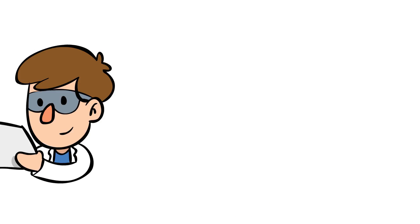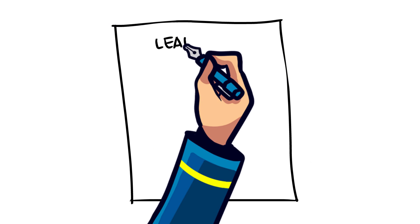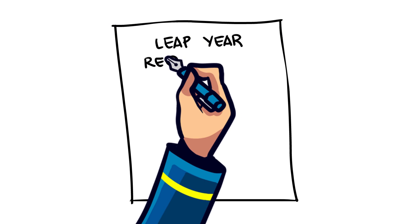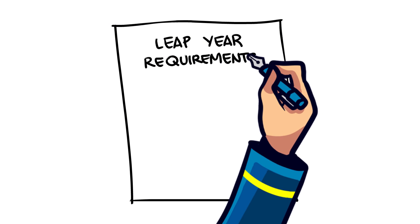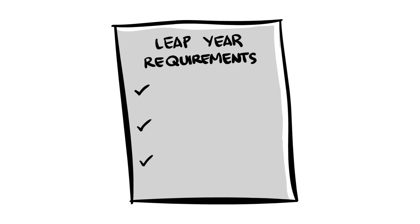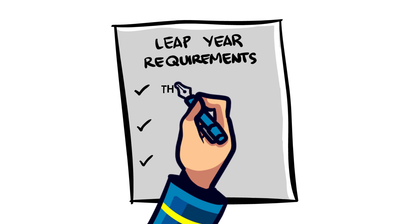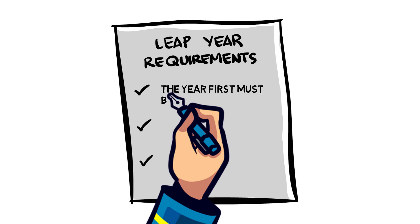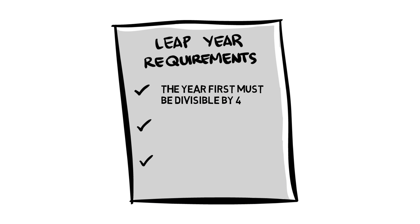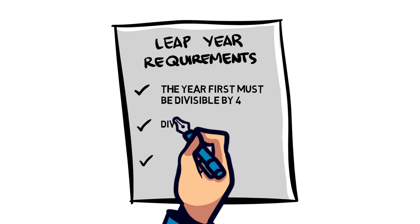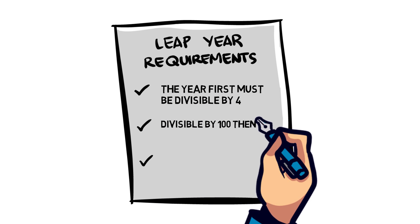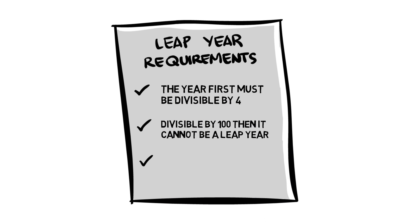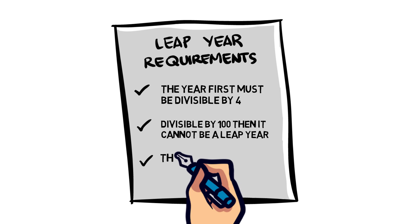First, the year must be divisible by four. If the year is divisible by 100, then it cannot be a leap year. An exception to this rule is if the year is also divisible by 400.